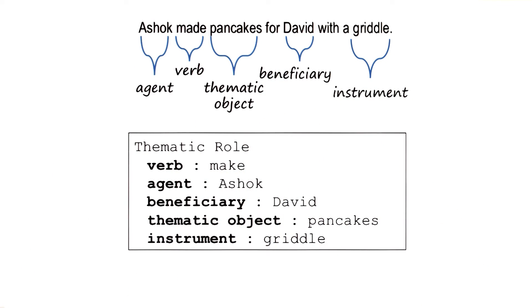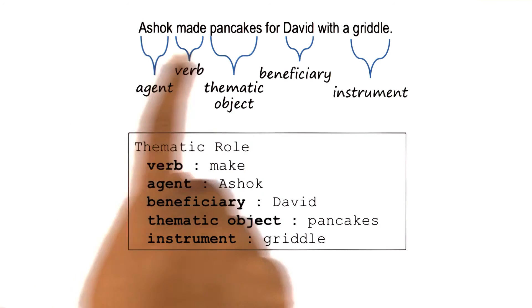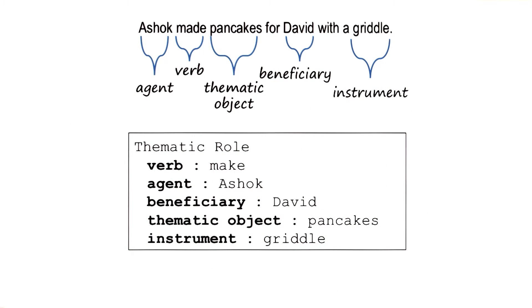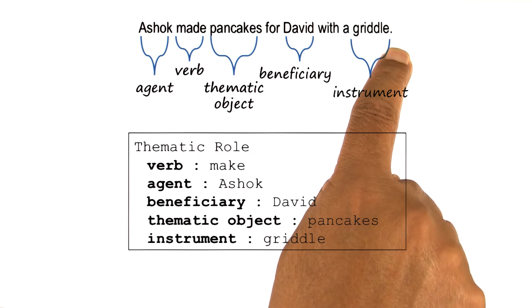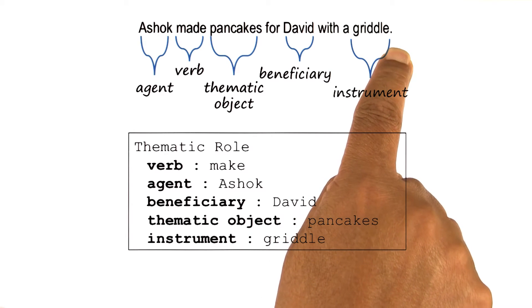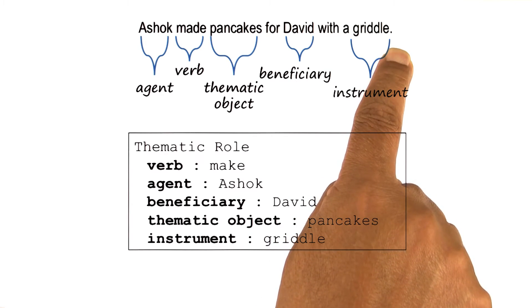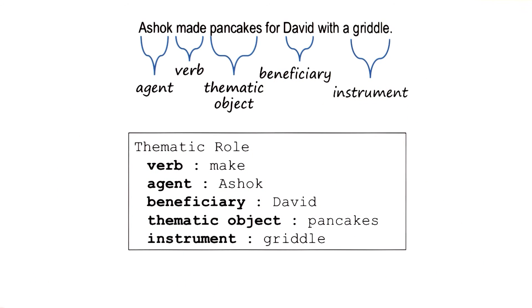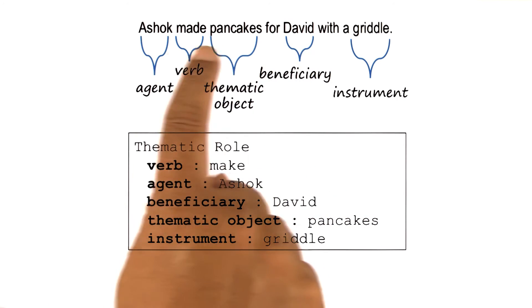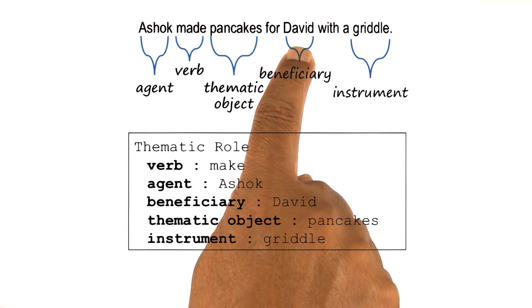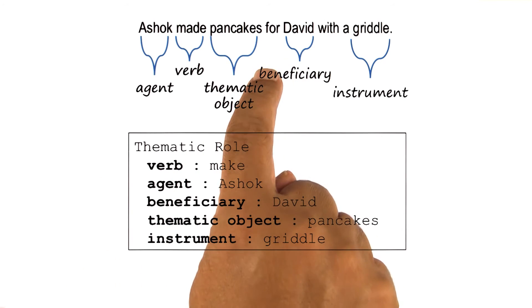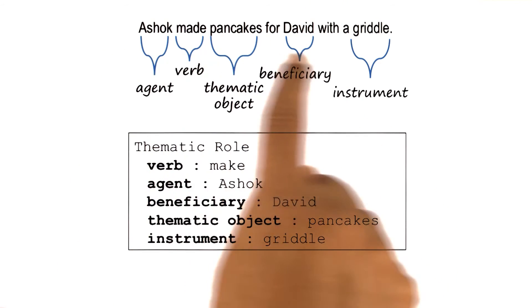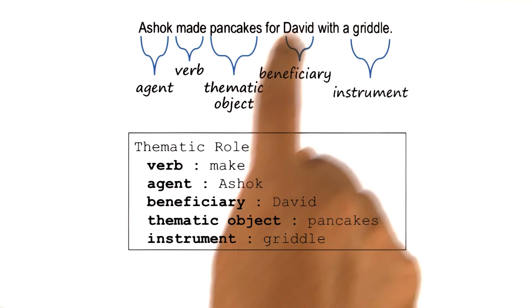This is perhaps also what you understand when you understand the meaning of this sentence. How do we know that you understood the meaning? Well, we know that because I can ask you some questions and you can draw the right kind of inferences. For example, given this sentence, I can ask you who ate the pancakes? And you might say David ate the pancakes, because Ashok made the pancakes for David. Notice that this information about who ate the pancakes was not present in this particular sentence — this is an inference you're drawing.